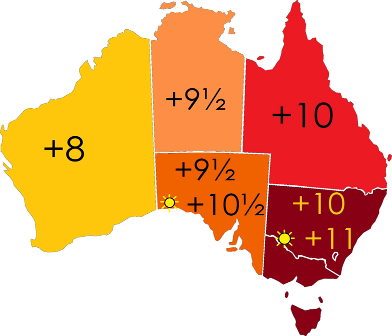Australia uses three main time zones: Australian Western Standard Time, Australian Central Standard Time, and Australian Eastern Standard Time. Time is regulated by the individual state governments, some of which observe daylight-saving time. Australia's external territories observe different time zones.